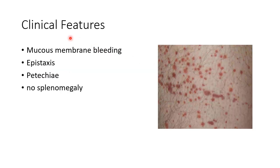The clinical features of ITP include mucous membrane bleeding, epistaxis, and petechiae. In ITP there is no splenomegaly. This picture shows petechiae seen in ITP.